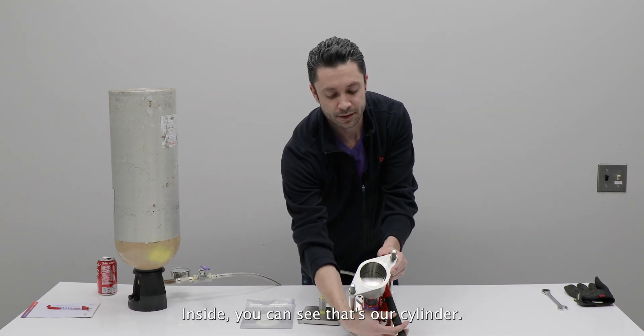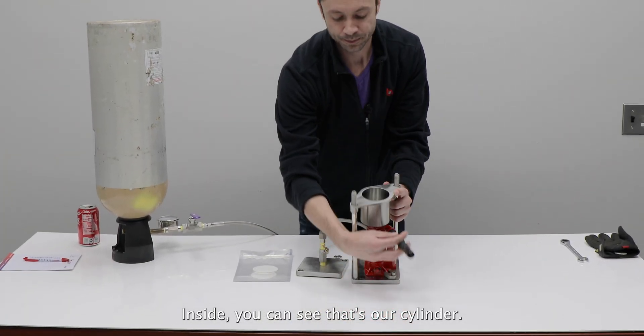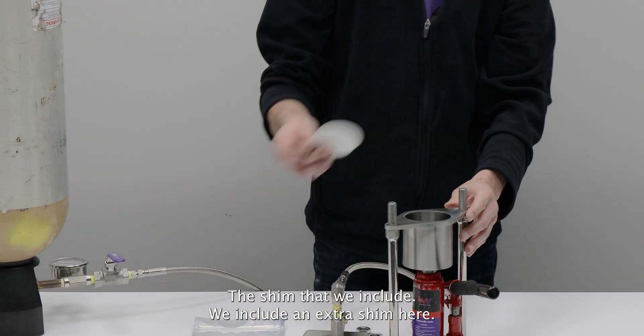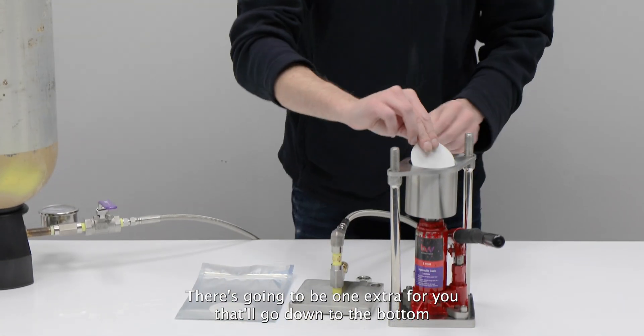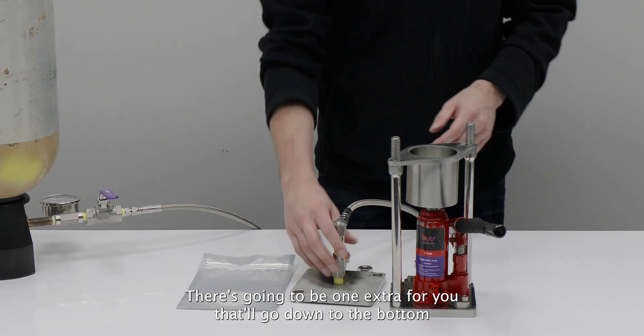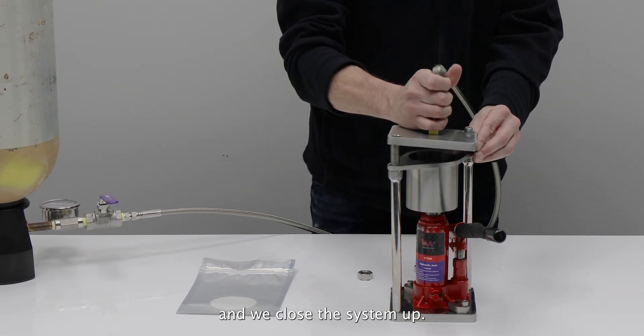Inside, you can see that's our cylinder. The shim that we include, we include an extra shim here. There's going to be one extra for you that'll go down to the bottom. And we close the system up.